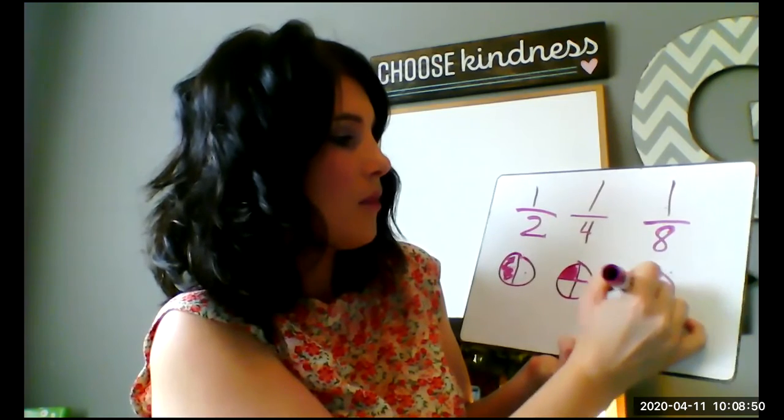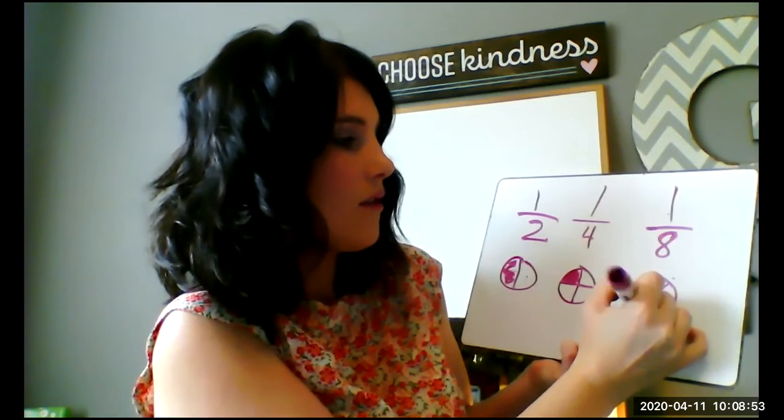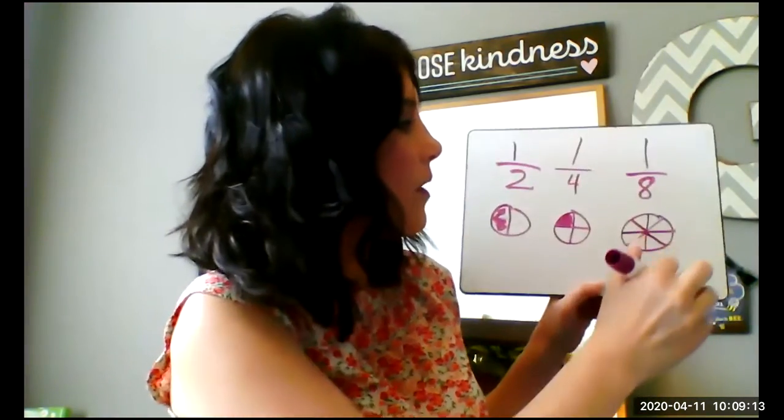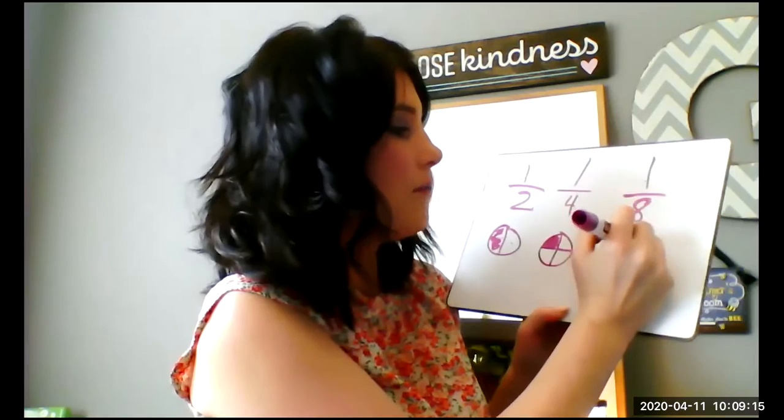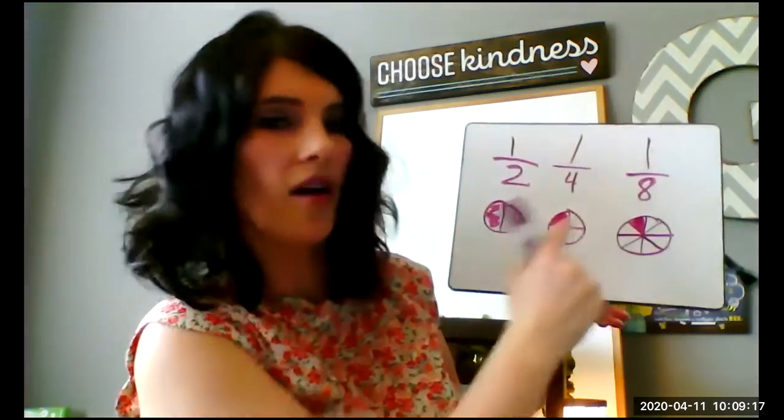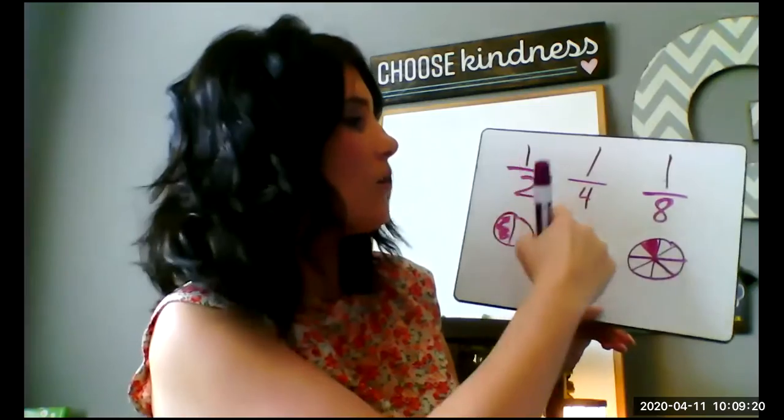I'm going to break it into eighths and break it into another part. There we go. So I have my one eighth here, I shade one in, and then I've got my one eighth. These are how you write the fractions that we've been talking about today.